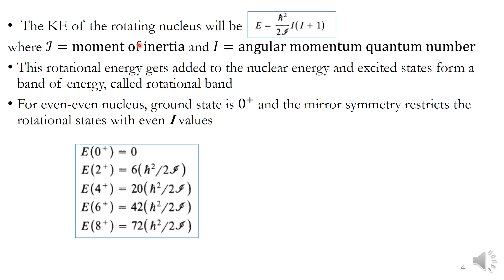The kinetic energy of the rotating nucleus is given by ℏ² I(I+1) divided by 2ℐ, where ℐ represents the moment of inertia and I represents the angular momentum quantum number. This is really equal to J² over 2ℐ, where J represents the angular momentum. This rotational energy gets added into the existing nuclear energy, and the excited states form a band of energy called the rotational band.